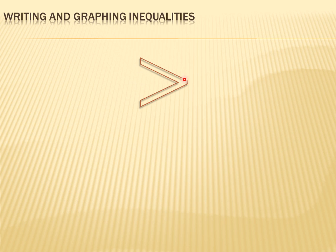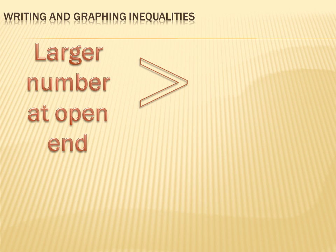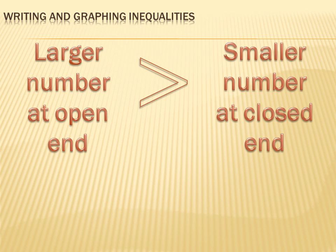Now this is the greater than symbol, and it's a little bit confusing — which end do you put which number on? I'm going to show you how to remember that. You'll notice that there's an open end and a pointy end to this symbol. The larger number goes at the open end, and this is the larger end of the symbol too. So the larger number is at the open end, the larger end. The smaller number is at the closed end, or the smaller end.